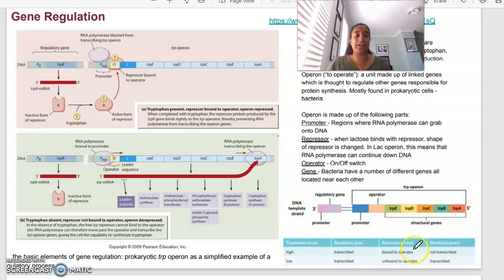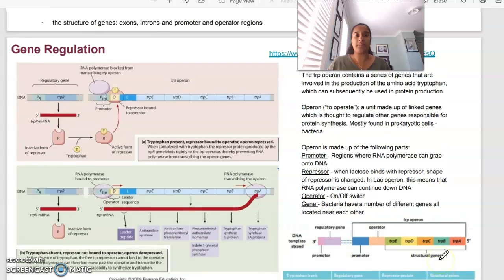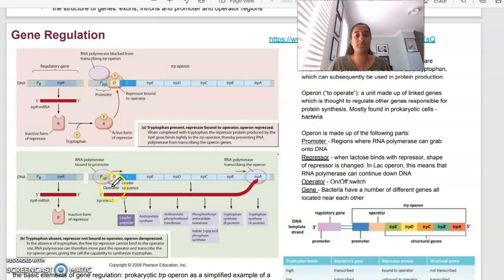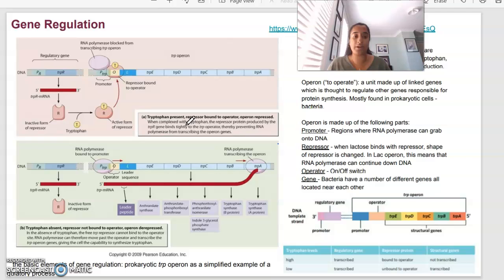In this case of tryptophan or the trp operon, basically if tryptophan levels are high, the gene is transcribed. The repressor protein, if bound to an operator, means that the structural genes will not be transcribed. But if tryptophan levels are low, the regulatory gene is still going to be transcribed. But the repressor is not going to be bound to the operator, which means the structural genes will be transcribed. This video here that I've linked is really great at explaining this process as well. But this provides you a bit of a summary of the difference between if the repressor is bound to the operator, then the structural genes are not going to be transcribed. And if the repressor is not bound, then the structural genes will be transcribed. Just knowing the difference between those two.